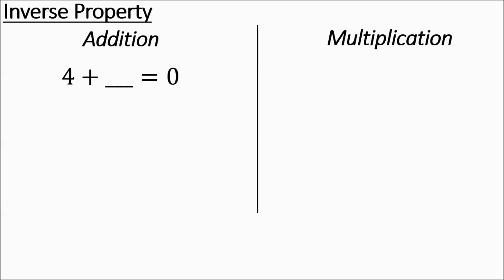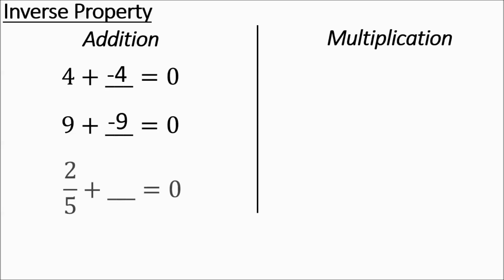Let's do a few examples. We've got 4 plus something equaling 0 — you'd add its opposite. Then you have 9 plus something equaling 0 — you add its opposite, negative 9. And 2 fifths plus something equals 0 — you're adding negative 2 fifths.